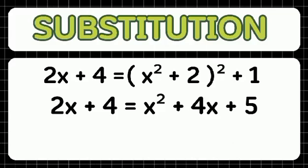For the second step, after we expand the squared term on the right side, we will simplify the equation. So the equation will be 2x plus 4 equals x squared plus 4x plus 5.